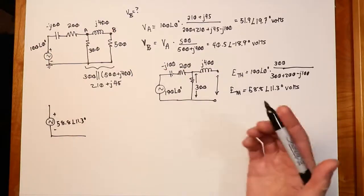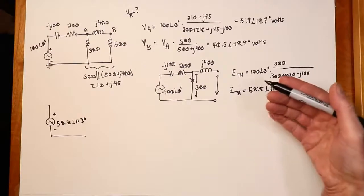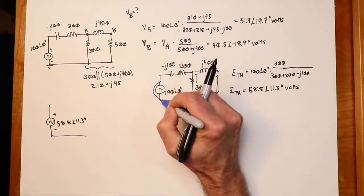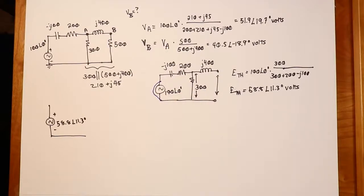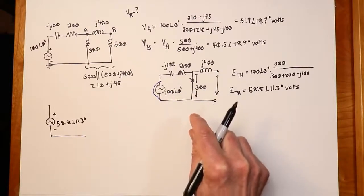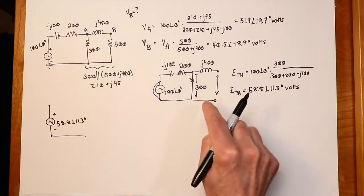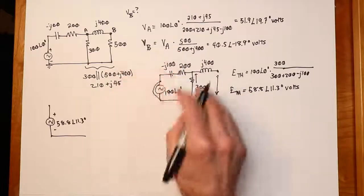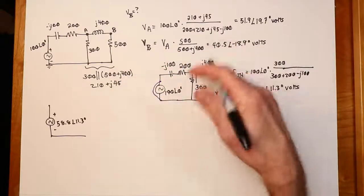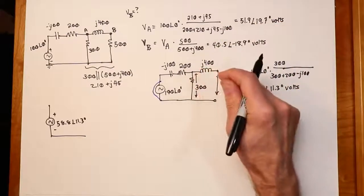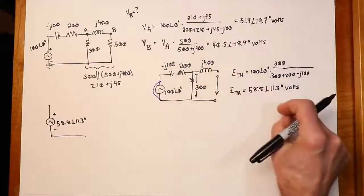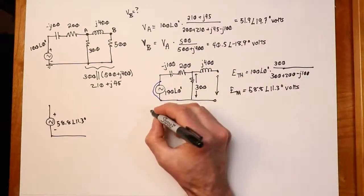Now, the question becomes, what's Z Thevenin? So now we would look essentially back into this circuit and we would replace the source with its internal impedance, which for the voltage source will just be a short. And what we see now is this 300 in parallel with the 200 -j100 combo, and that thing, that triple element, is in series with the j400. So it's not like we're completely ignoring the j400 here. I mean, it wasn't really impacting the E Thevenin, but it does definitely impact the Z Thevenin.